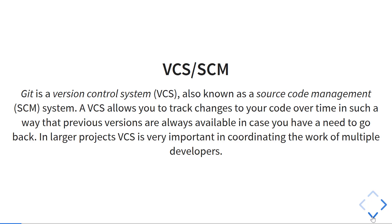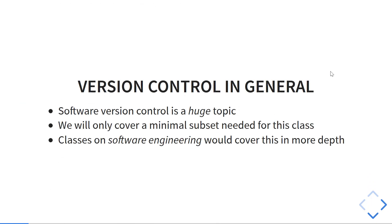But we're talking about using it on smaller projects. Version control and software version control is a huge topic, with larger projects needing to take into account more and more issues about how you should manage the project. We only need a minimum subset, and this minimum subset that we need for class is also beneficial to you on your own projects. We'll have another slide set that covers specifically what you're going to do in this class.